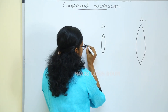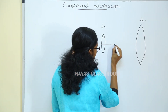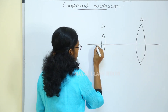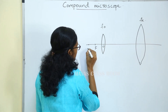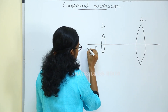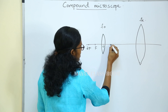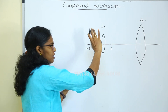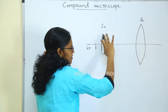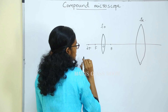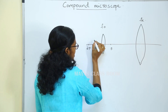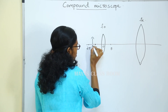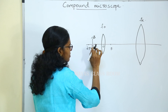I am going to explain the principal axis of the lens — the optic center, focus F, then 2F, and so on. We place the object between F and 2F of the objective lens.